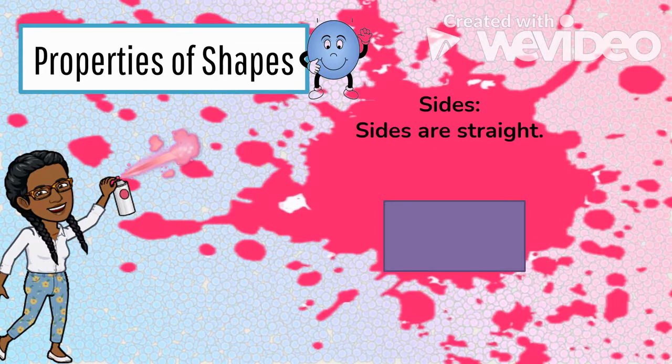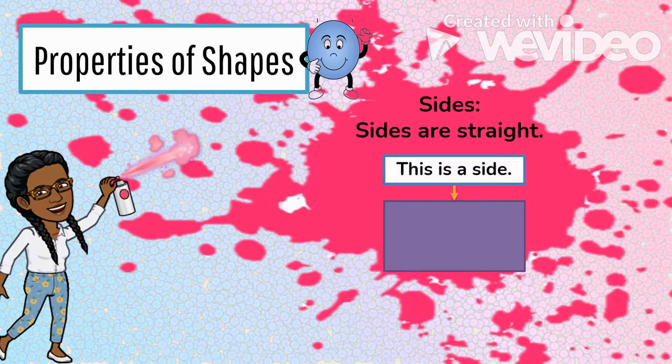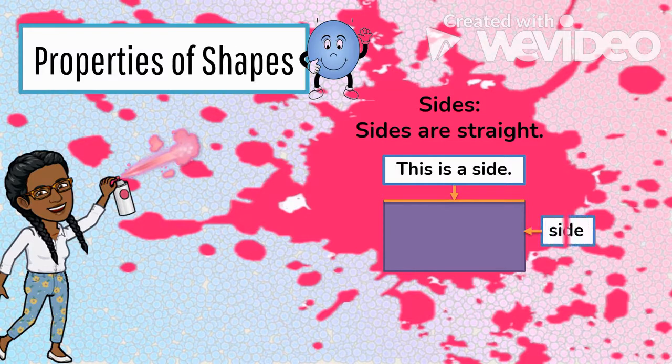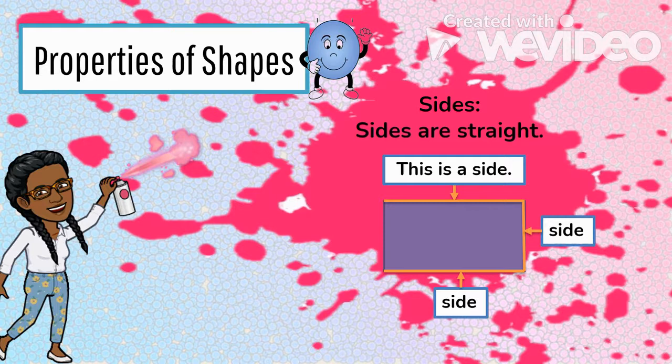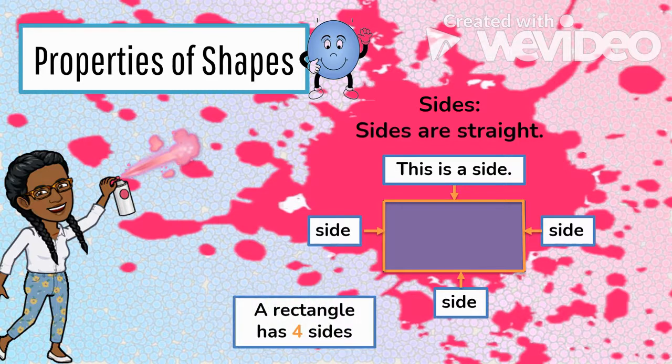These are called sides. Sides are straight. This is a side. This is a side. This is a side. And this is a side. A rectangle has four sides.